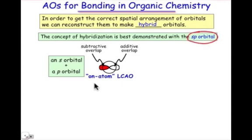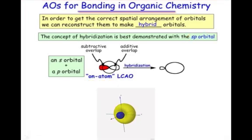An sp hybrid orbital is an LCAO combination that takes place on one atom. We end up with constructive and a destructive part. One part of that atomic orbital will have a large lobe. One part will have a small lobe.